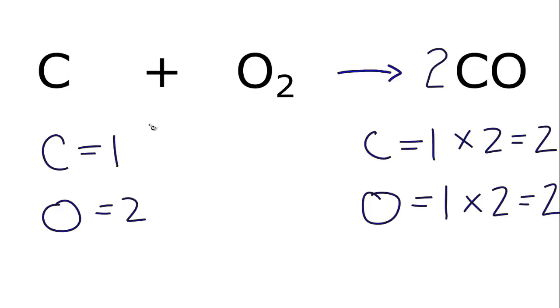On the reactant side, I know that 1 times 2 equals 2. So if I have the 1 here and I put a coefficient of 2, that gives me 2 carbons. Now everything's balanced. I have 2 carbons on each side and 2 oxygens on each side.